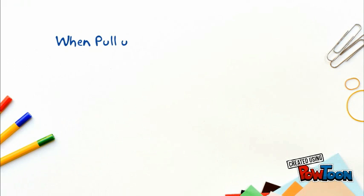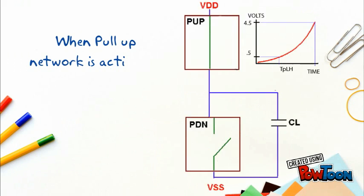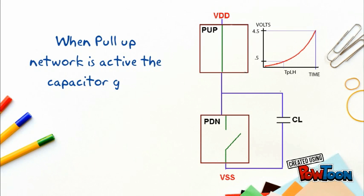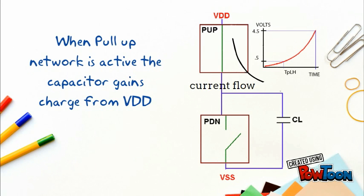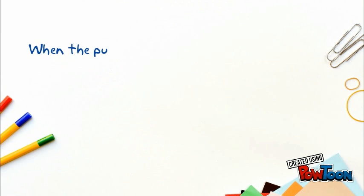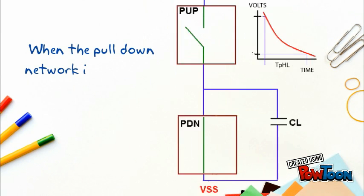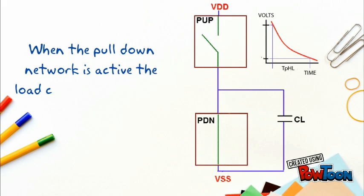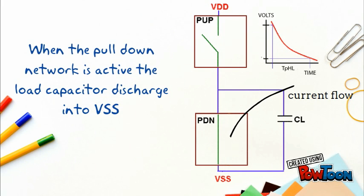When the pull-up network is active, the capacitor gains charge from VDD. When the pull-down network is active, the load capacitor discharges into VSS.